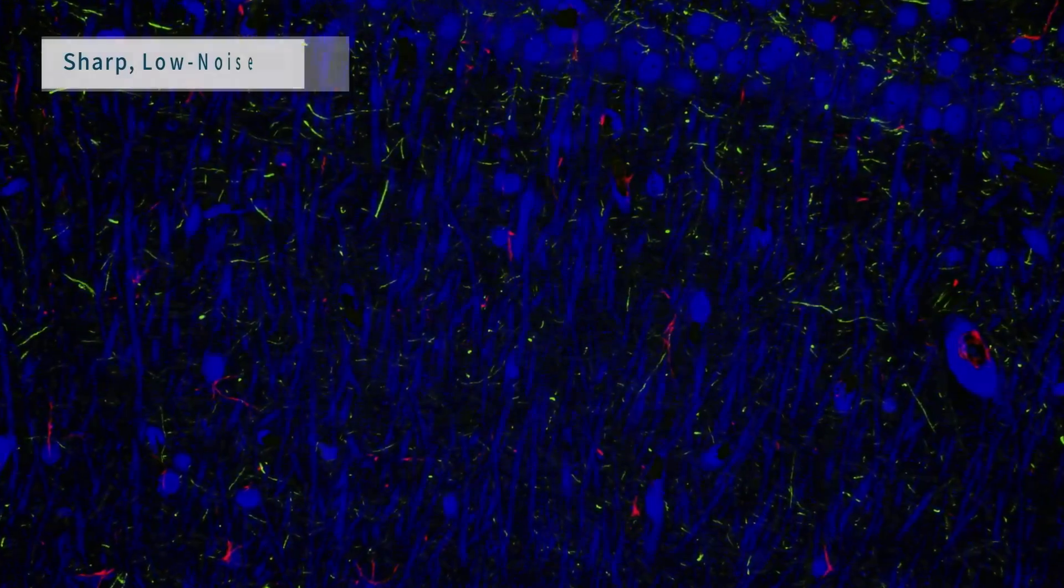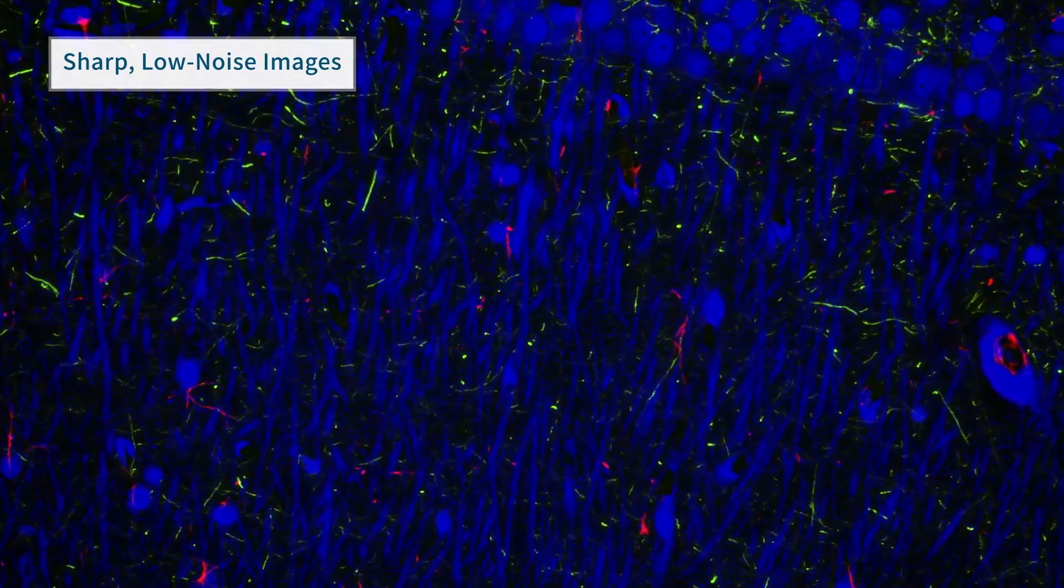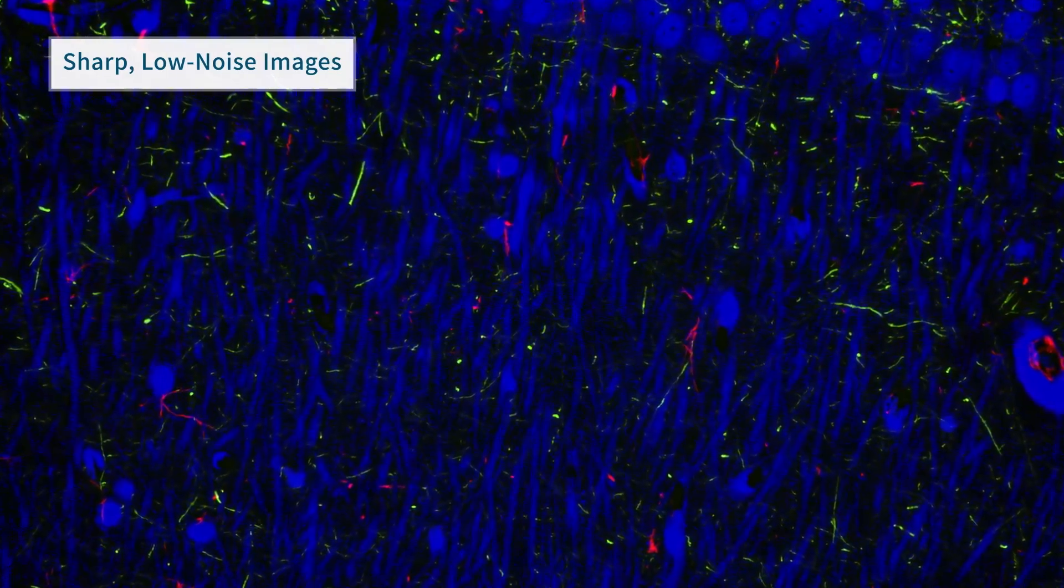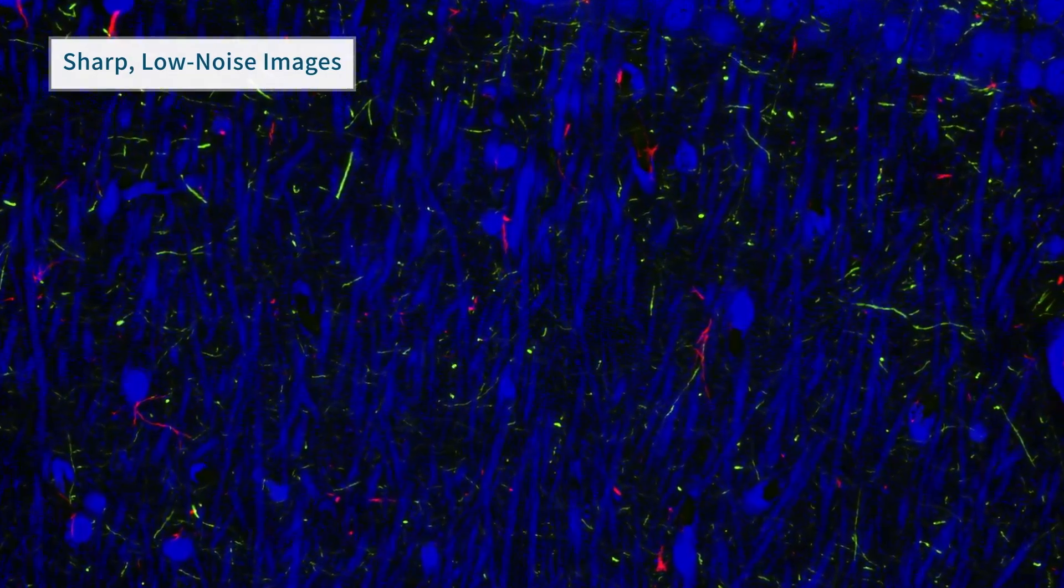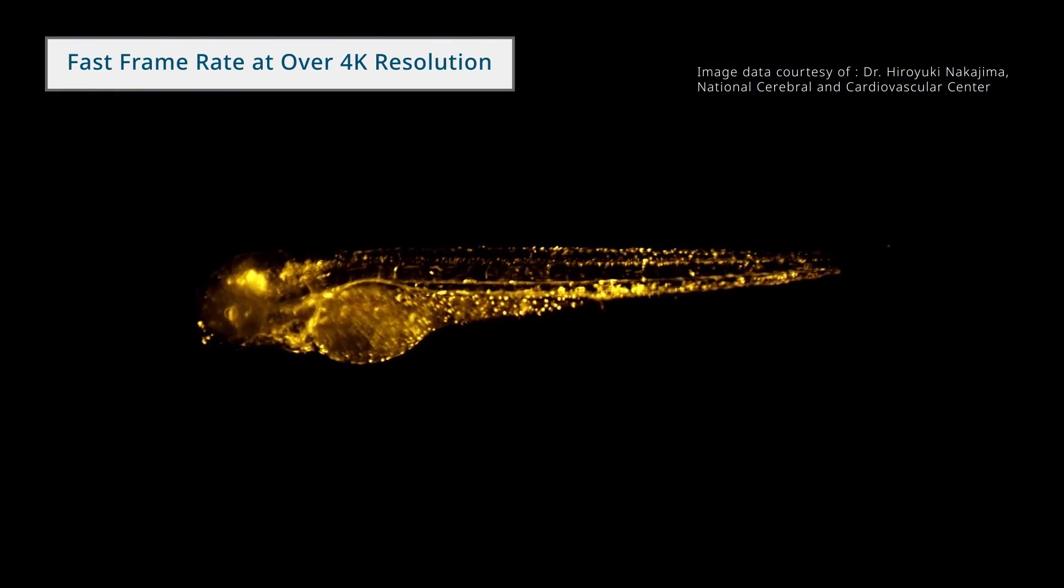The high-sensitivity cooled CMOS sensor makes it easier than ever to capture sharp, low-noise fluorescence images. With a fast frame rate of 22 frames per second at over 4K resolution and 60 frames per second at full HD resolution, the camera provides smooth, fast, live images for easy framing and comfortable live observation.